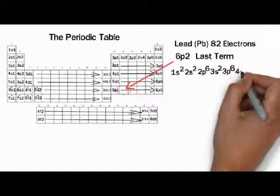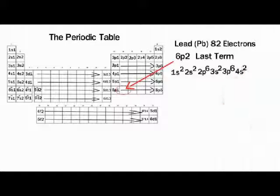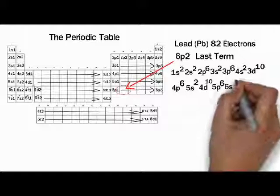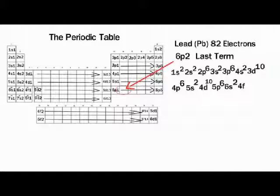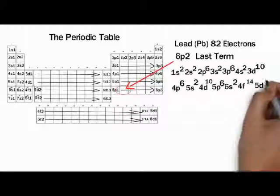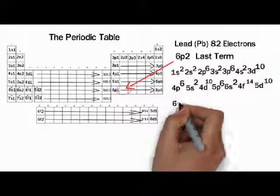1s is occupied, so we write 1s². 2s is occupied, we write 2s². 2p is occupied, we write 2p⁶. 3s is occupied, so we write 3s², and we're going to do this all the way until we get to 6p². This can be a little bit tedious, but all we're doing is reading across the periodic table left to right, and we're writing out as soon as we fill up a sub-level or a section. After 5p⁶ comes 6s², and then after 6s² comes 4f¹⁴, and then finally we're at 5d¹⁰, and then after that 6p².